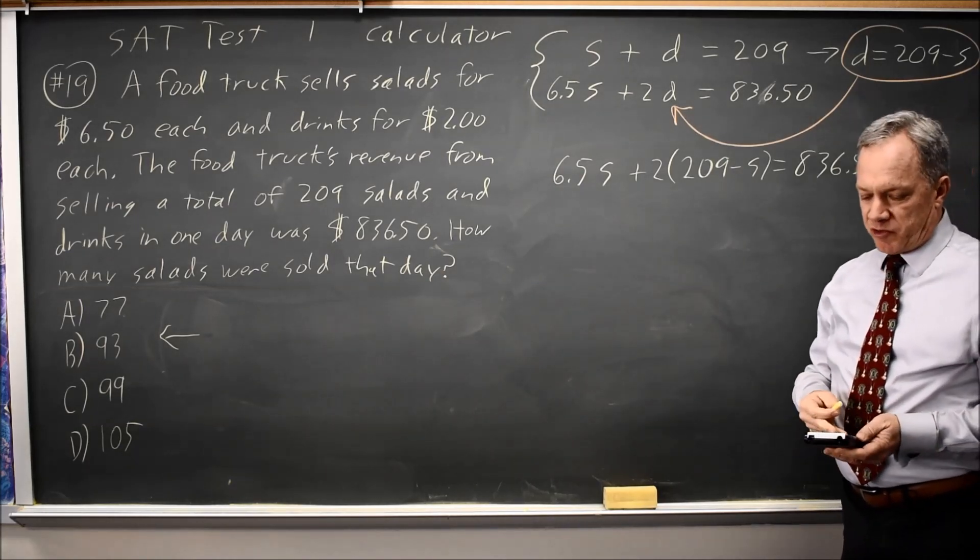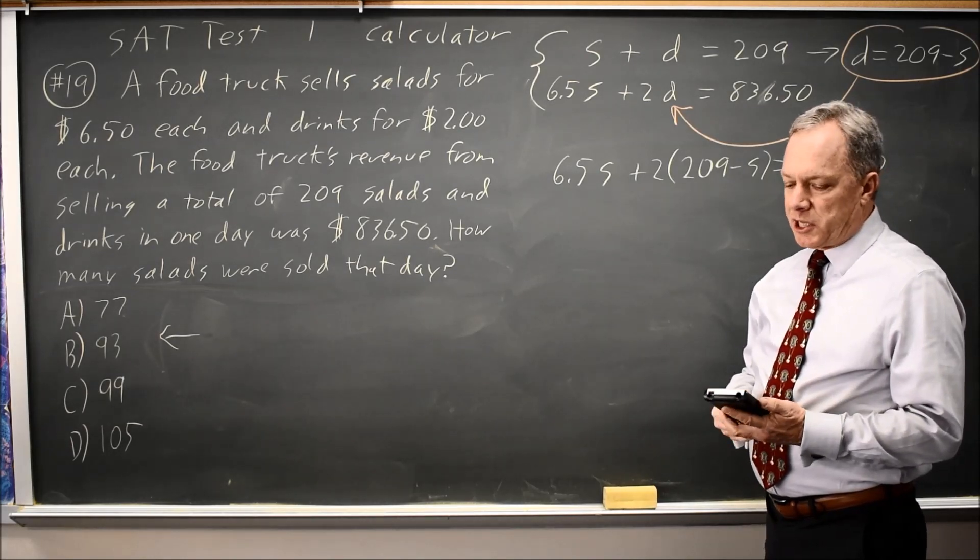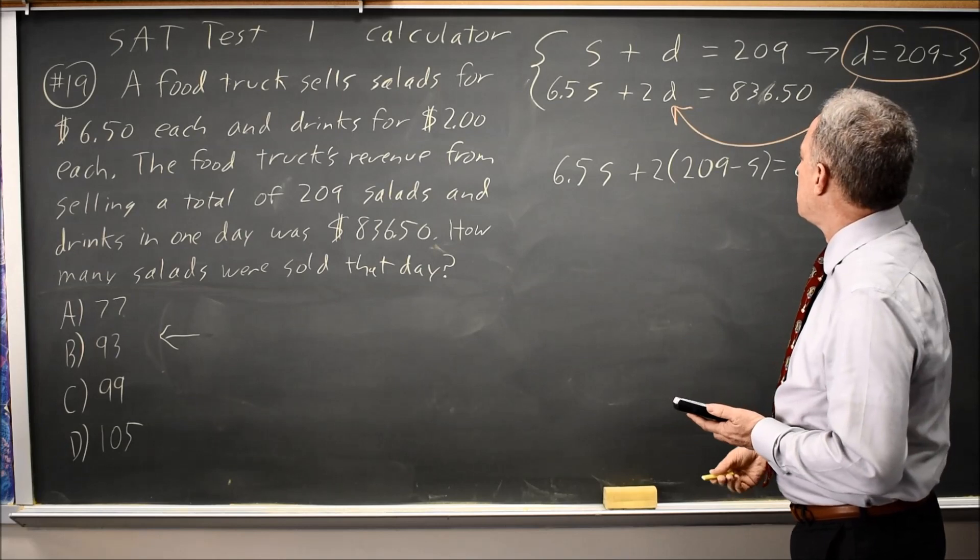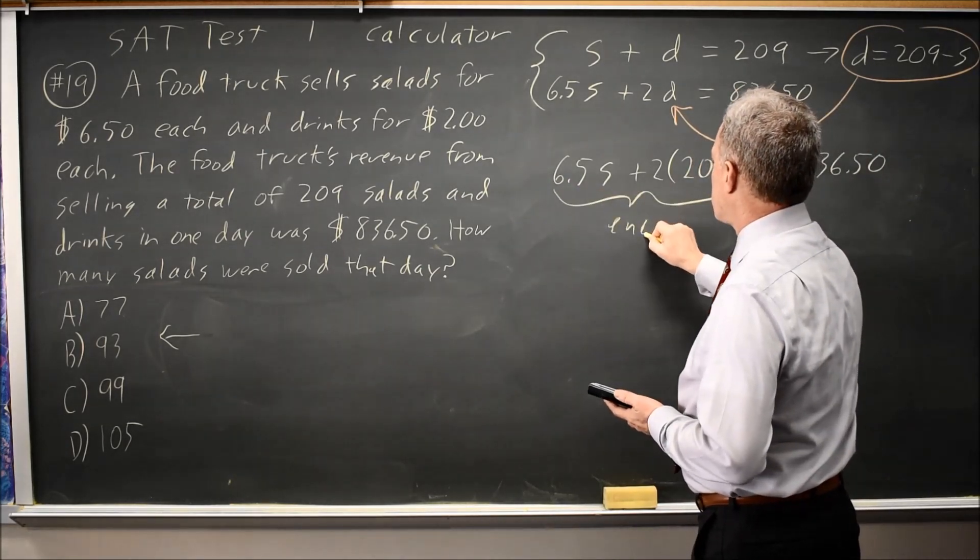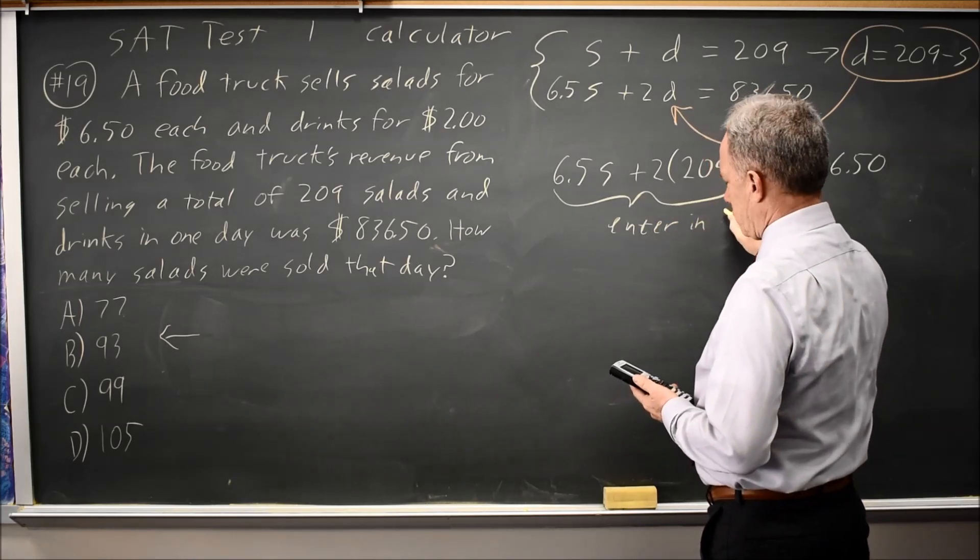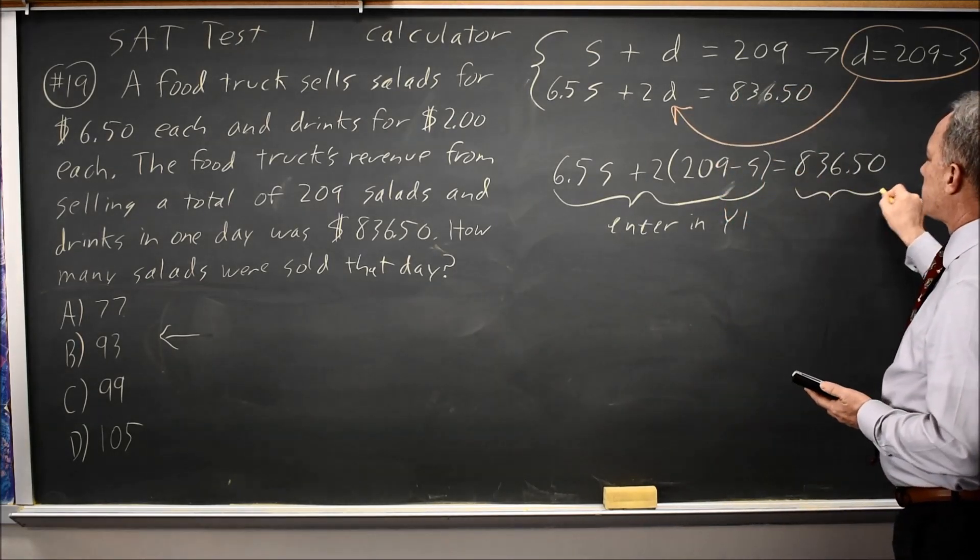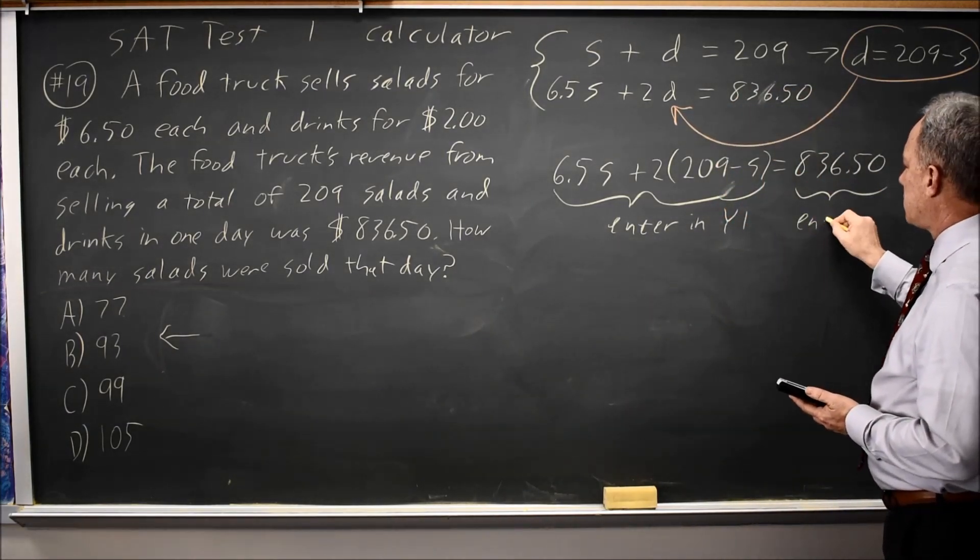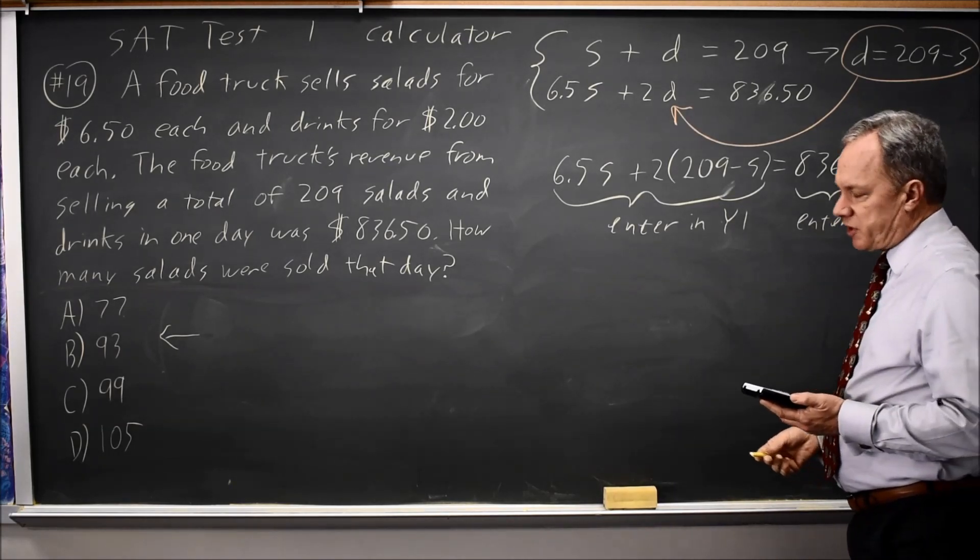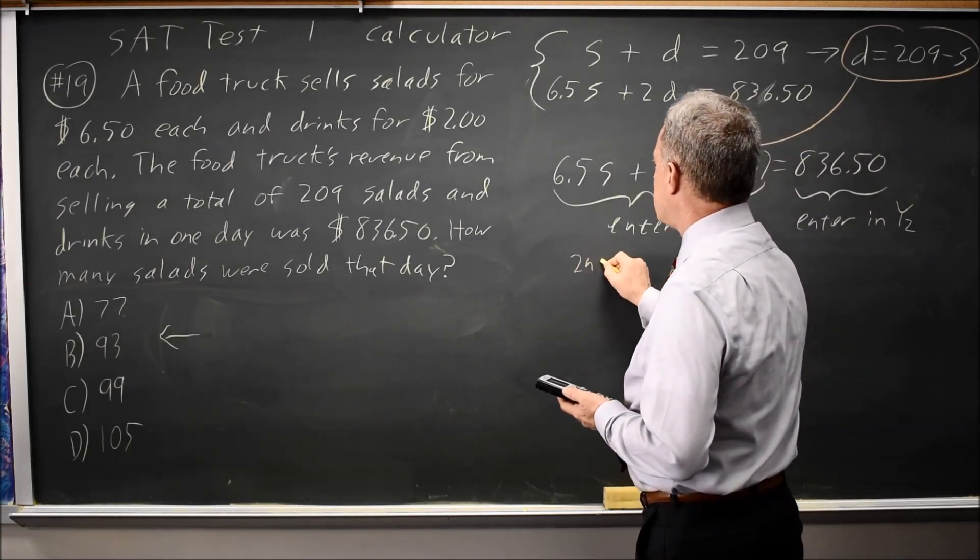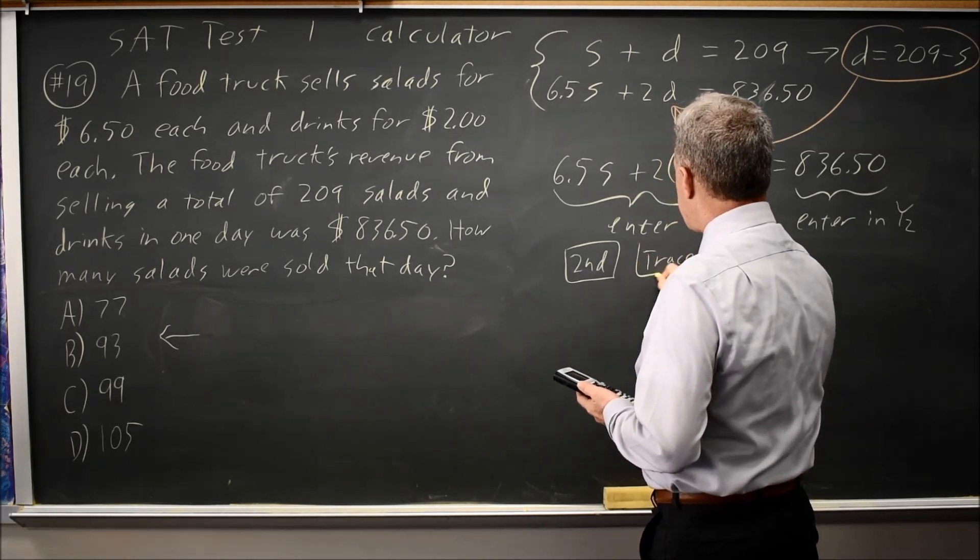This is an equation with only one variable. So on the TI-84 or 83, I can go to Y equals, enter the left-hand side in Y1, the whole left-hand side, enter the whole right-hand side in Y2, and then find the point of intersection on this calculator. That is the second key and then the trace key. Second trace is calculate.